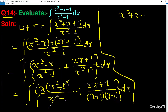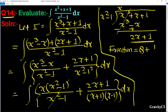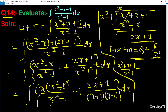Alternatively, we can divide x³ + x + 1 by x² - 1. Taking x, we get x³ - x, and subtracting gives remainder 2x + 1. So the fraction equals quotient plus remainder over denominator, which is x + (2x + 1)/(x² - 1).